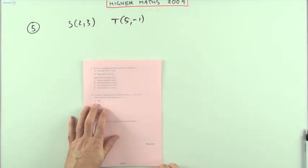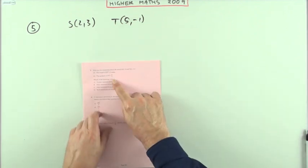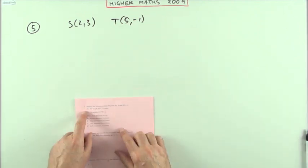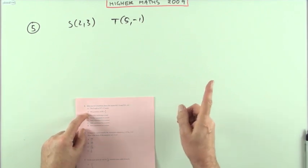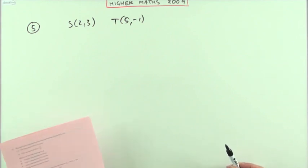Number 5 from the 2009 paper, the first paper on the multiple choice. Here are two points and two statements about it. This is a multiple selection. I have to decide for each of these statements, one and two, whether they're true or false.